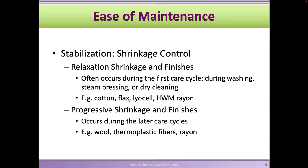We're going to start with ease of maintenance. One finish we do is shrinkage control, because fabrics shrink and if you want them not to shrink you have to go through a certain process to reduce it. Shrinkage can happen in two different ways. There's relaxation shrinkage, which means that every time you wash your fabric, especially in the first cycle, it will relax and shrink. Progressive shrinkage means every time you wash something, each time it shrinks a little bit.